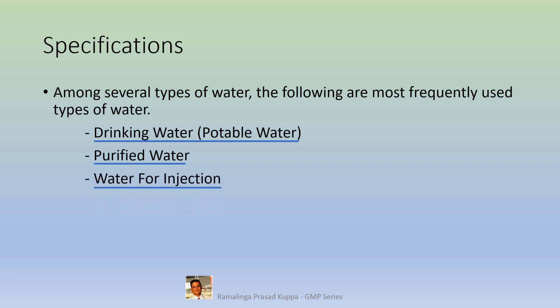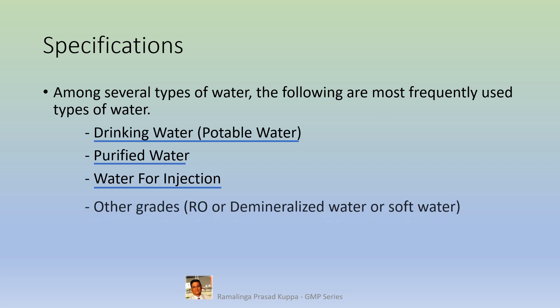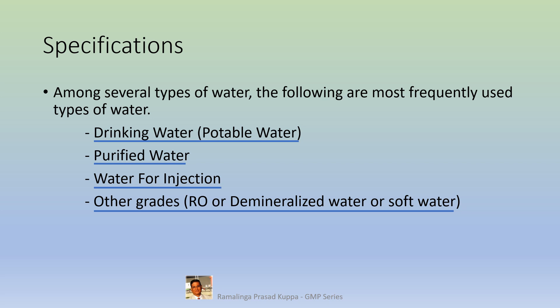Water for injection has similar specifications. Other grades include RO or demineralized water or soft water. There are specifications for turbidity, color, pH, TDS — that is total dissolved solids —